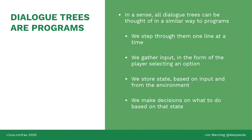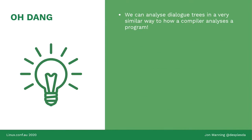We have to realize that dialogue trees have a lot in common with computer programs: we step through them one line at a time, we gather input (player choices from a limited set), we can store state by writing to variables, and we make decisions based on that state. Because Yarn is a programming language and we've written a compiler, we realize we can do this kind of analysis using our existing toolset.